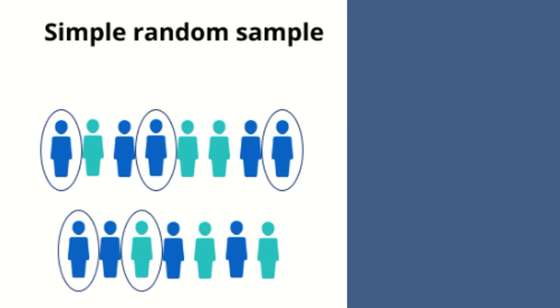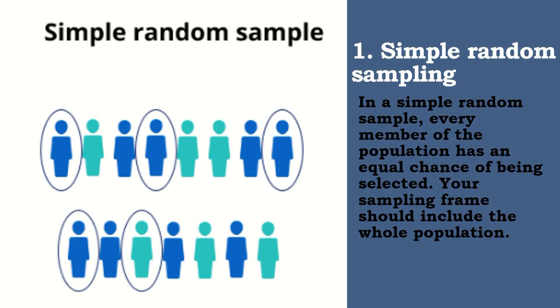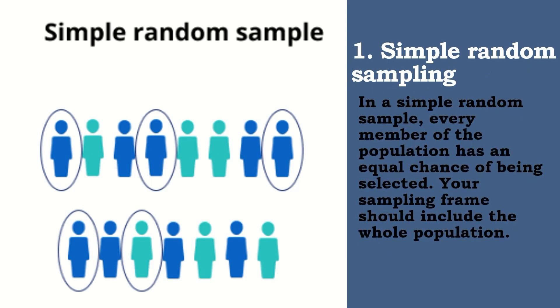Let's have the first type of probability sampling, which is the simple random sampling. In simple random sampling, every member of the population has an equal chance of being selected. Your sampling frame should include the whole population, kasama lahat ng miyembro ng population. To conduct this type of sampling, you can use tools like random number generators or other techniques that are based entirely on chance.